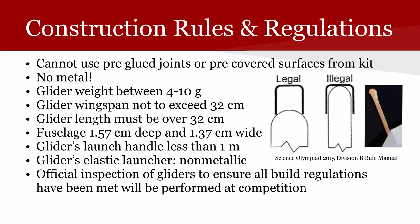The glider wingspan is not to exceed 32 centimeters, and this is really important. Absolutely measure, measure again, remeasure, and just measure one more time, because after you put so much time into it, you really don't want to get it wrong. Another important part: the glider length must be over 32 centimeters. So 32 centimeters is the key number here — the wingspan from wingtip to wingtip cannot be over 32 centimeters, however the glider length from front to back needs to be over 32 centimeters.